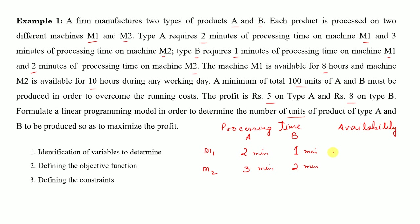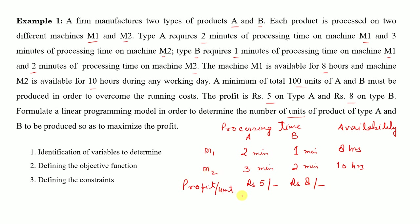The availability of M1 is 8 hours and M2 is 10 hours. The profit per unit is rupees 5 on A and rupees 8 on B. One more condition is given: a minimum total of 100 units of A and B must be produced, meaning total units must be greater than or equal to 100.